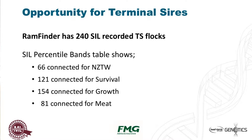Looking at how terminal sires are connected and benchmarked, there's a real opportunity to do better. Of the 240 terminal sires recorded on SIL, only 66 are connected for New Zealand terminal worth. I've got 121 connected for survival and 154 connected for growth — pretty good — but only 81 connected for meat. So there's a real opportunity to improve things here, and it's been a key impetus behind setting up this next generation site.